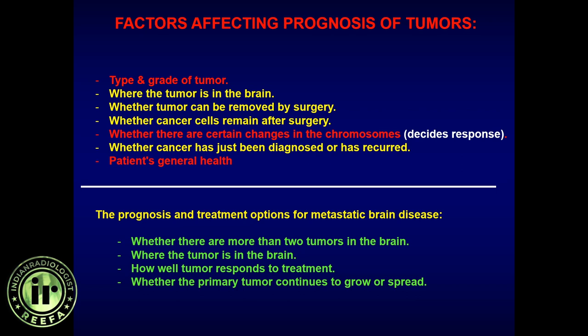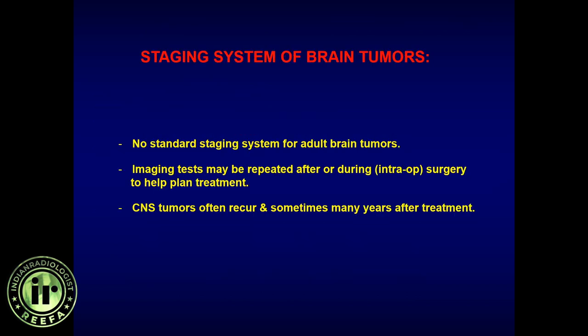Even with a favorable tumor — say a low-grade WHO1 IDH-mutant co-deleted oligodendroglioma in the frontal lobe — if the patient's overall health is poor (immunocompromised, asthma, diabetes, cardiac disease, Crohn's disease, ulcerative colitis), the patient cannot tolerate chemotherapy, radiation, or surgery. This is something we tend to overlook: all tumor factors may be favorable, but poor general health leads to very poor outcomes.